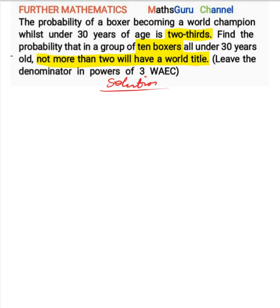Let the probability that a boxer will become a world champion be p. Then p will be equal to two-thirds, that is 2 over 3. Then we're going to introduce another one — the complement — which is going to be q. q will be 1 minus 2 over 3, which gives us 1 over 3.